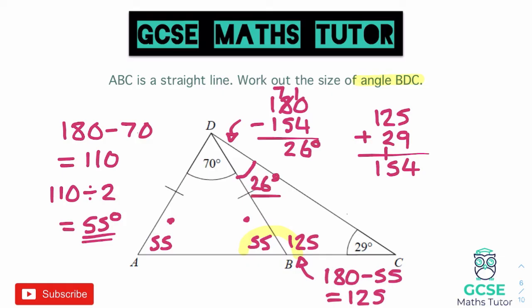That is the final answer — we have found angle BDC equals 26 degrees. This question had two triangles put together, but you could also have it put together with a quadrilateral. That's the type of question you're going to have a go at. Just try to move around the shape finding any angles you can until you get to the final answer.